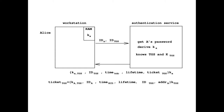The ticket for the ticket-granting service contains: the session key K(A,TGS); the identity of Alice; the time as known by the KDC; the ticket lifetime; the identity of the TGS; and the address (IP or hostname) of Alice's workstation. Alice can't use this ticket to get services from another machine.